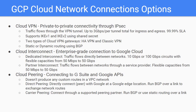You can also connect two instances of Cloud VPN to each other. Each Cloud VPN tunnel can support up to 3 GB per second total for ingress and egress. Cloud VPN supports IKE V1 and IKE V2 using the shared secret. Google Cloud offers two types of Cloud VPN gateways: HA VPN and Classic VPN.